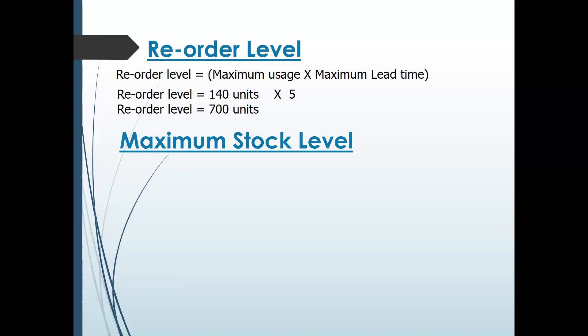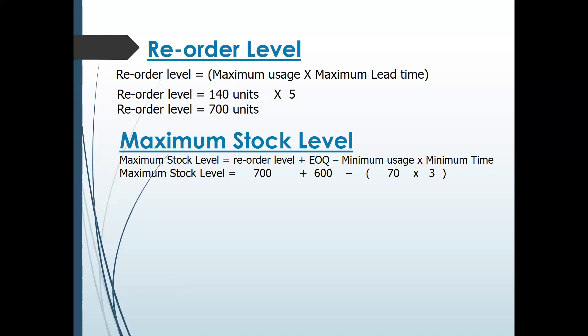Next is maximum stock level. The formula is: Reorder Level + EOQ − (Minimum Usage × Minimum Lead Time). Reorder level is 700, EOQ is 600, so together that's 1300. Minimum usage is 70 units and minimum lead time is 3 weeks, so minimum usage × minimum lead time = 210. Therefore maximum stock level = 1300 − 210 = 1090 units.